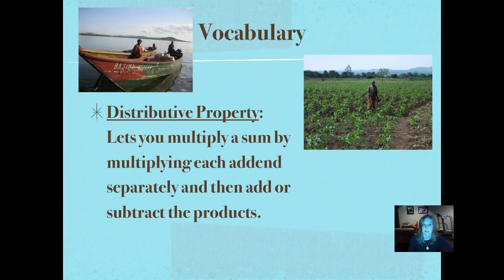We do have vocabulary today. The distributive property is something new. It's a strategy that lets you multiply a sum by multiplying each addend separately and then adding or subtracting the products. It's a way of breaking a number apart to make it easier to do mental math. If it doesn't make it easier, then there's no benefit to using the distributive property.